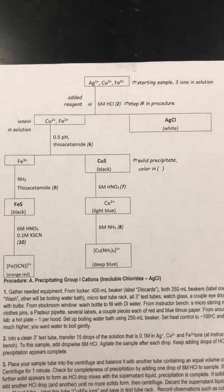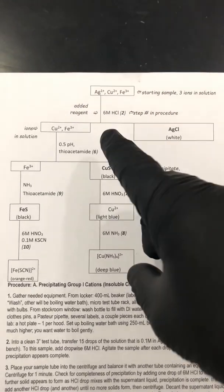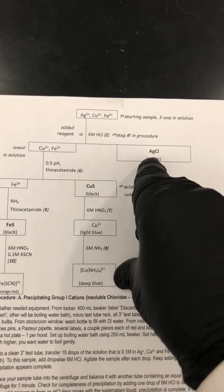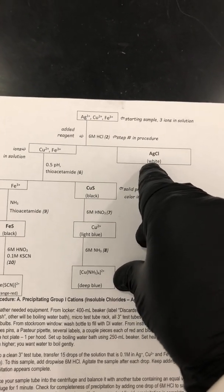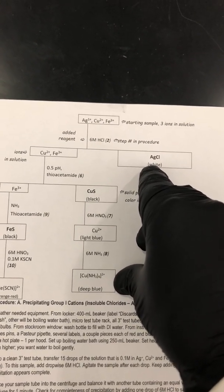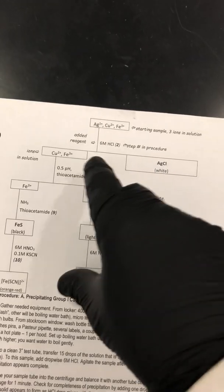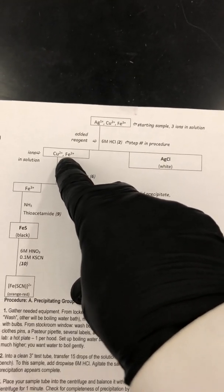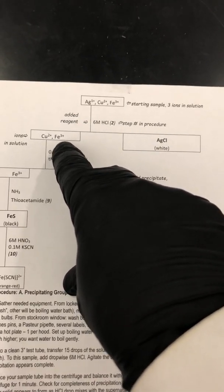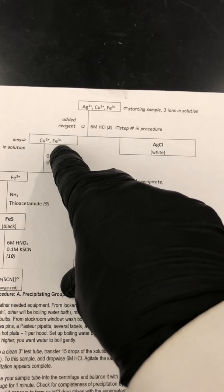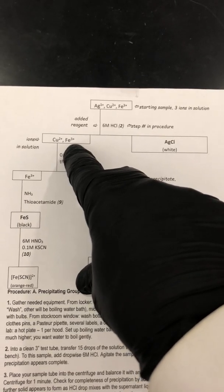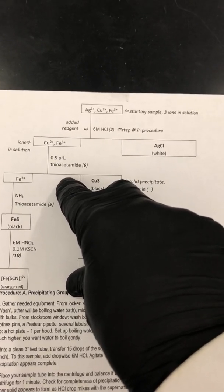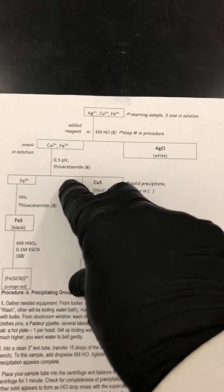Going back to our flowchart so we can see our strategy: in the first step we added HCl to precipitate silver chloride, and we've collected that in a pellet. Now we have a supernatant that contains copper II and iron III ions, and our next step is to precipitate them as sulfides.